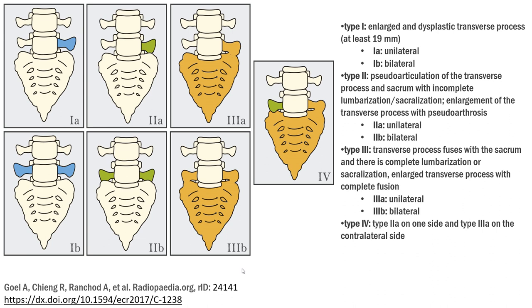And Type 3b, we can see in image 3b, is bilateral transverse process fused with the sacrum, and there is complete lumbarization or sacralization — a large transverse process with complete fusion bilaterally.